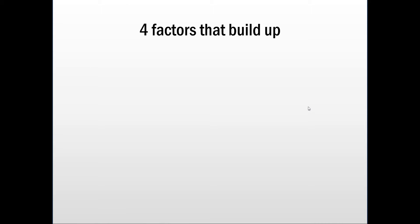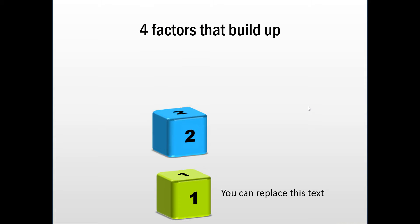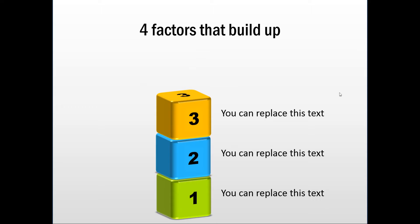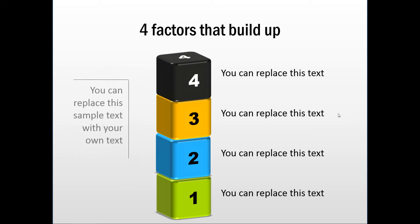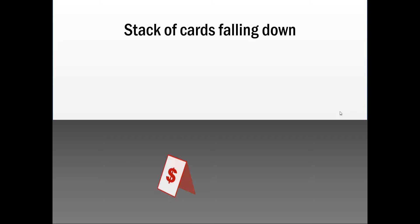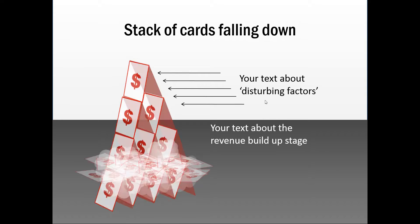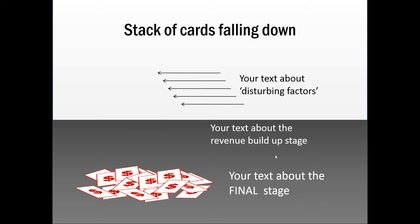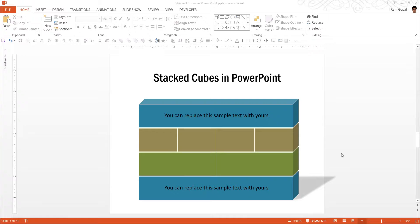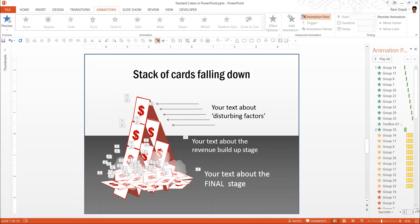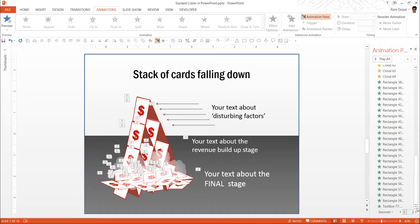Another template talks about four factors that build up, with fairly advanced animations that even write the numbers on top. There is also one about a stack of cards falling down, using custom animation to show the concept of collapsing — for example, a revenue build-up stage disrupted by market factors. The amount of animation involved in creating something like this is enormous, as you can see from all the animation steps.